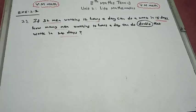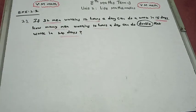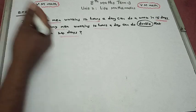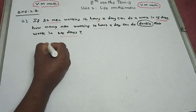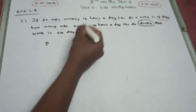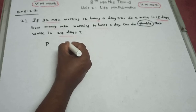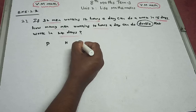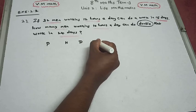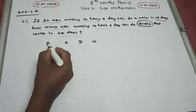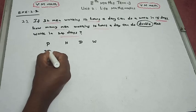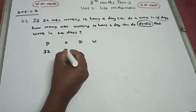Now this is very simple concept. Men is P (person), hours per day is H, days are D, next is work. Person: 32 men, per day 12 hours to finish, 15 days, so work is 1.